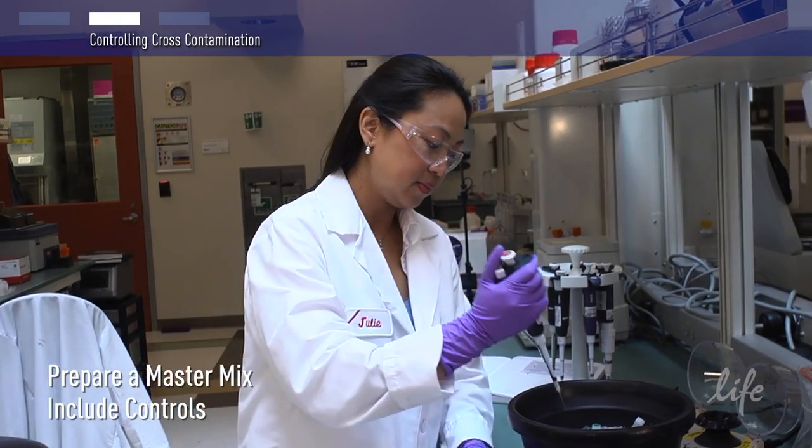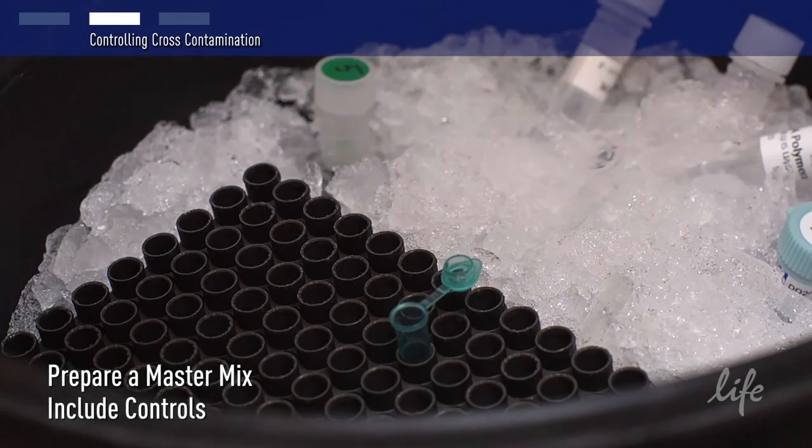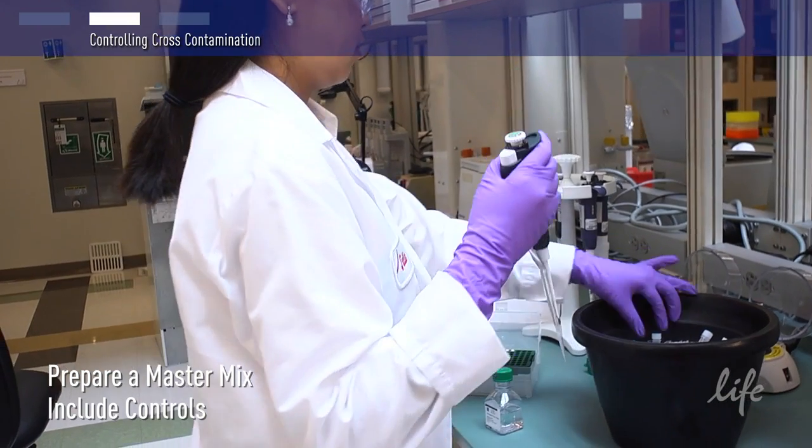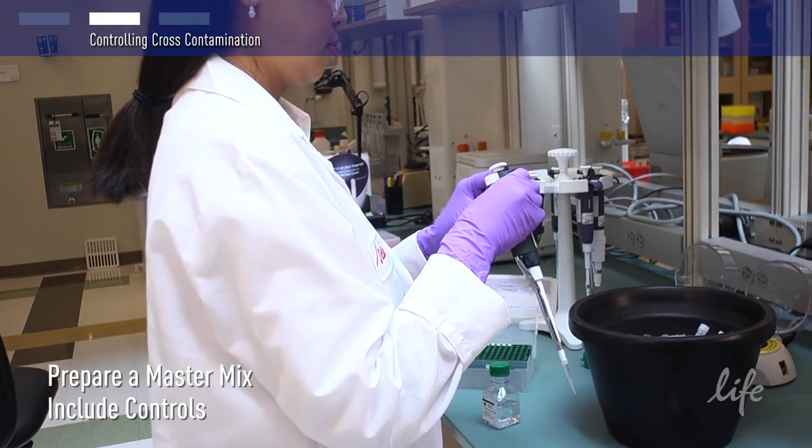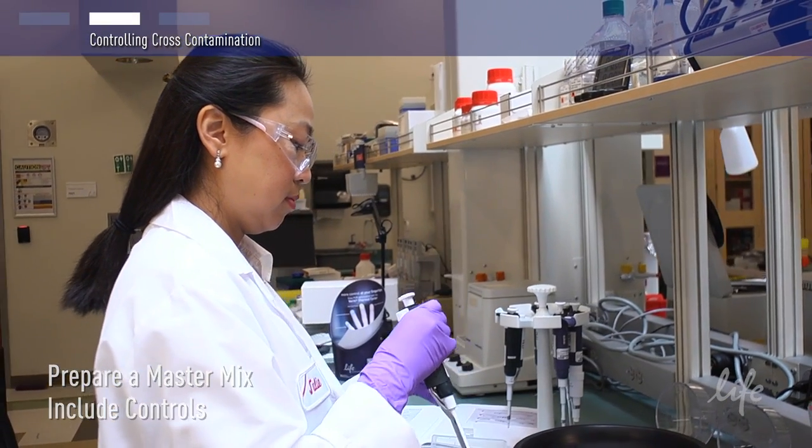When running multiple reactions or doing colony PCR, minimize pipetting steps by preparing master mixes. Always prepare positive and negative control samples for every PCR run. An example of a negative control is substituting water in place of DNA template.